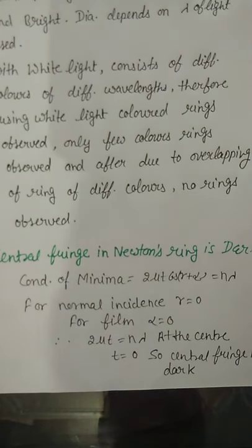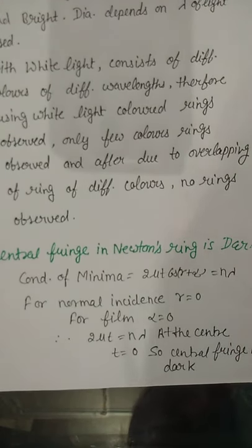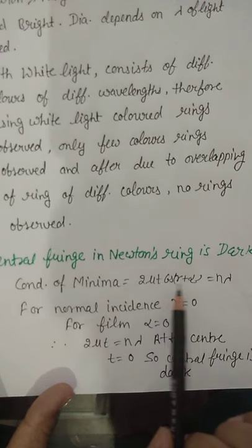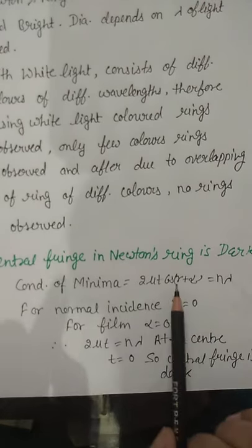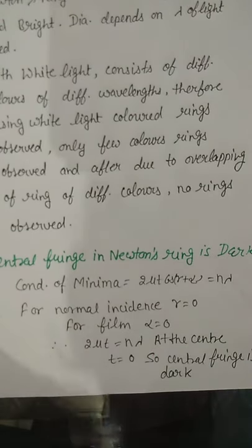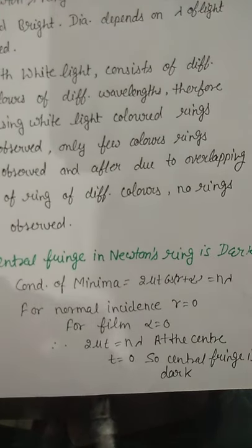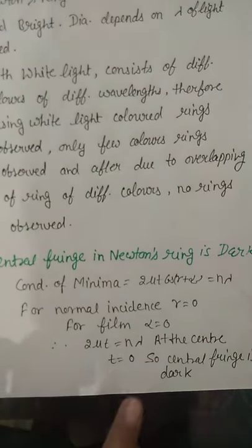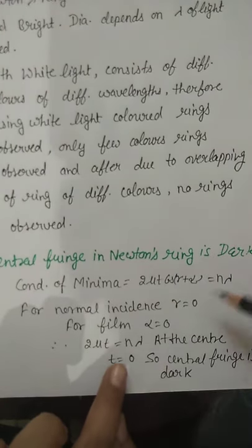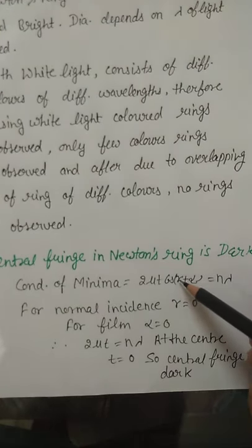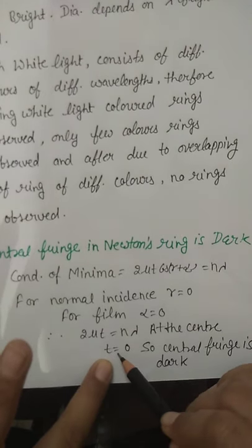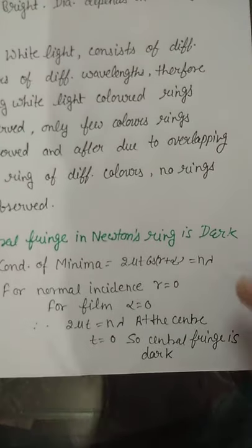The central fringe in Newton's rings is dark. Using the condition of minima: 2 mu × t × cos(r + alpha) = n × lambda. For normal incidence, r equals 0, and since a very thin air film forms between the plano-convex lens and the glass plate, alpha is also very small and taken as 0. So cos(0) equals 1, giving 2 mu × t = n × lambda. At the center, at the point of contact, t equals 0, so the central fringe is dark.